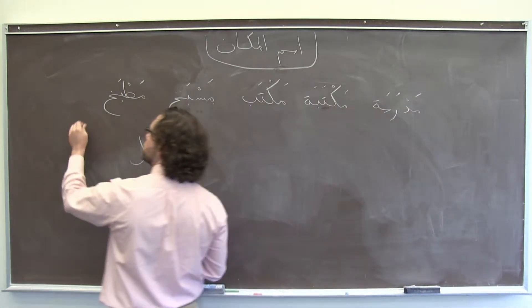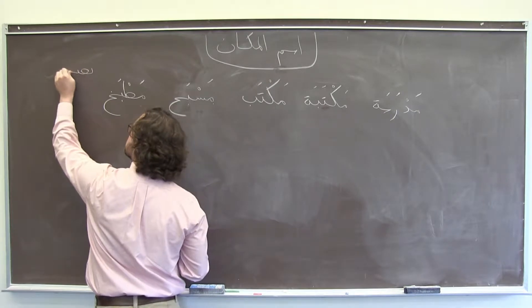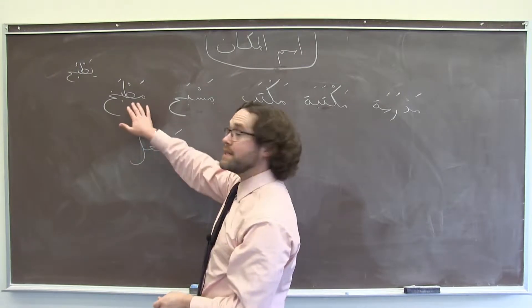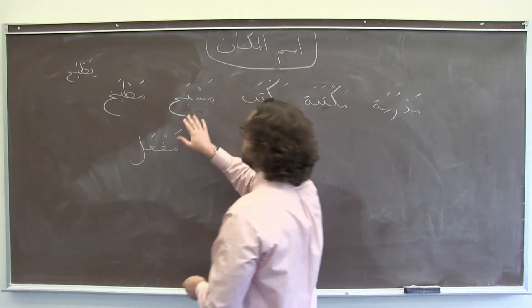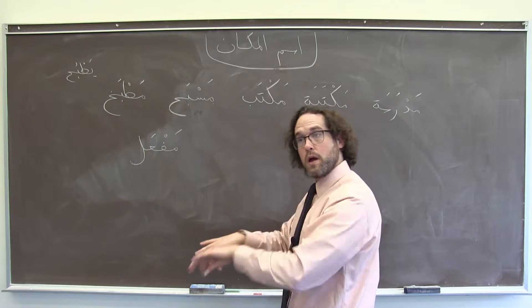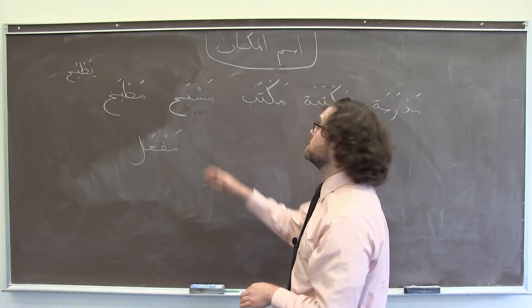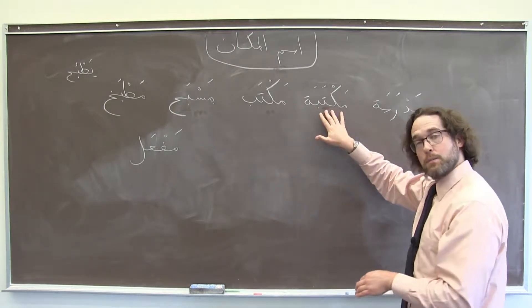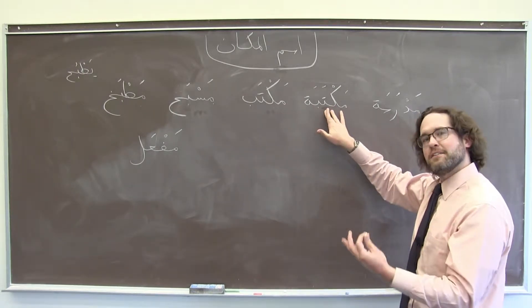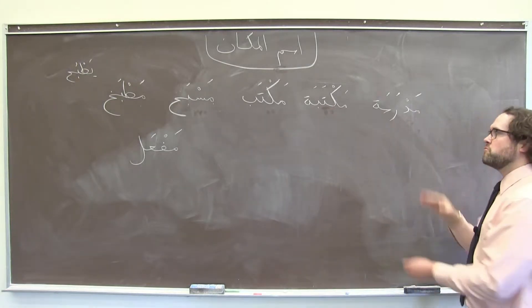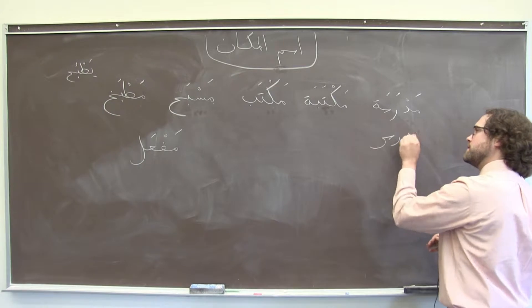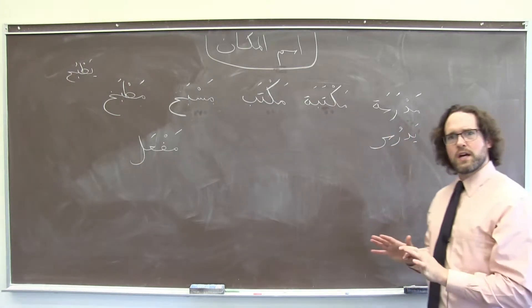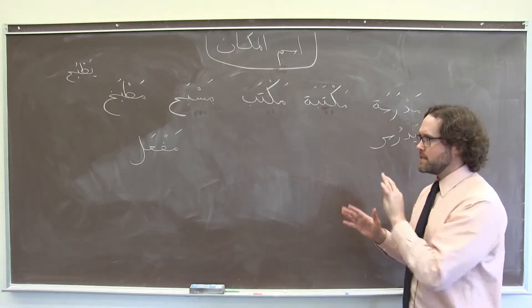مطبخ comes from the verb يطبخ, to cook, and it's a place of cooking — a kitchen. مسبح comes from the verb يسبح and means a swimming pool, a place of swimming. مكتب — desk — a place of writing. مكتبة, a library, also a different kind of place of writing. مدرسة, from يدرس, is a place of studying. So let's start with a couple more verbs and see a few more examples.